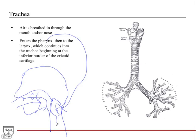The pharynx then splits into the larynx anteriorly and the esophagus posteriorly. This is the point where food and air separate — food goes down the esophagus, air goes down the larynx. If you swallow down the wrong pipe, that means you've swallowed your drink down the larynx into the trachea instead of down the esophagus, which is what causes you to start coughing.